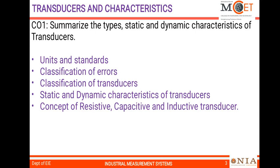The classification of transducers is also covered, including primary and secondary transducers, active and passive transducers, and transducers versus inverse transducers. Static and dynamic characteristics of transducers are very important in measurement, as the characteristics curve helps us improve the quality of measurement. Finally, types of transducers — mainly resistive, capacitive, and inductive — will be covered.